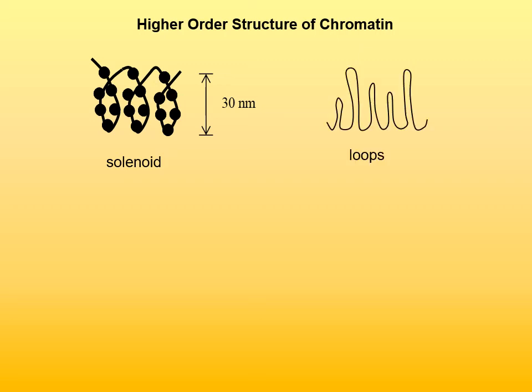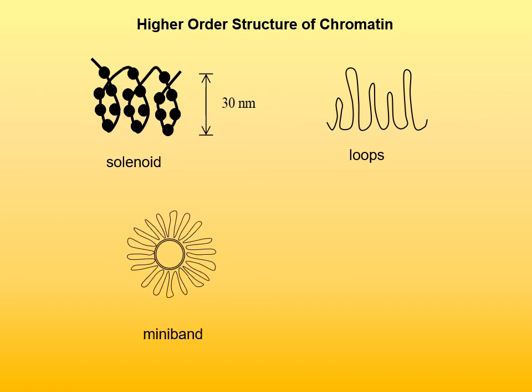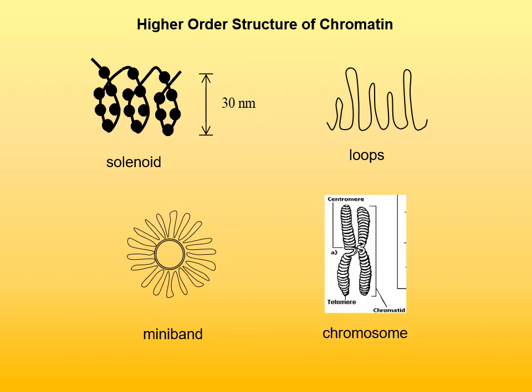Filaments then form loops, and each loop consists of between 60 and 150 base pairs. Those loops are then arranged radially about the circumference of a single turn of a chromosome to form a miniband, and then minibands stack on top of each other to form a chromosome.